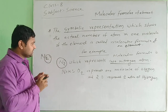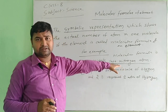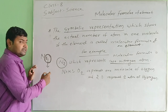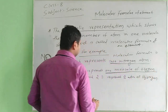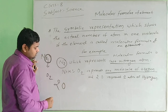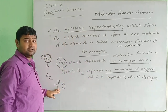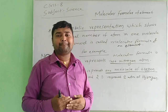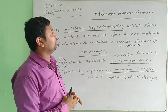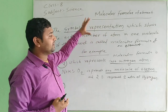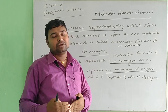Here we have seen two atoms are present in nitrogen. Similarly, O2 represents one molecule of oxygen and two atoms. O2 — O represents oxygen, and the 2 means two atoms. So this is the number of atoms present in the molecule of an element, which is called the molecular formula of an element — the symbolic representation.